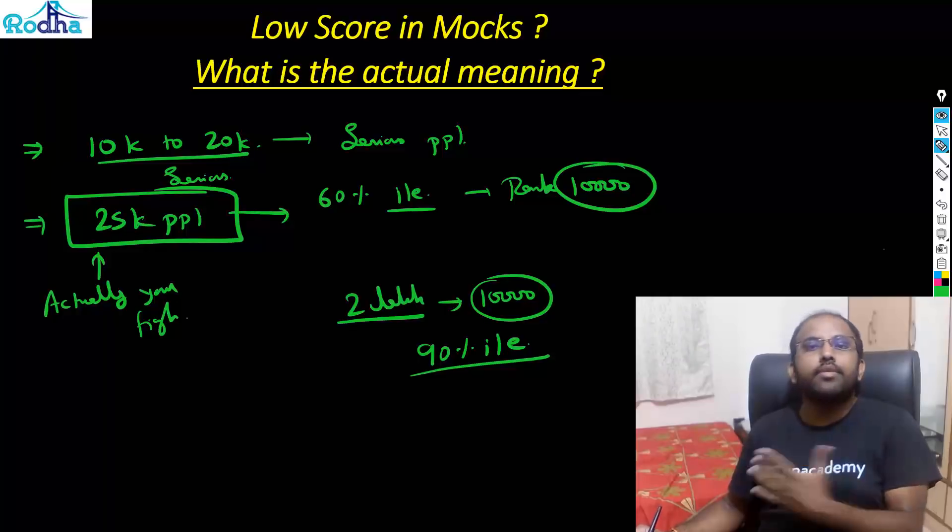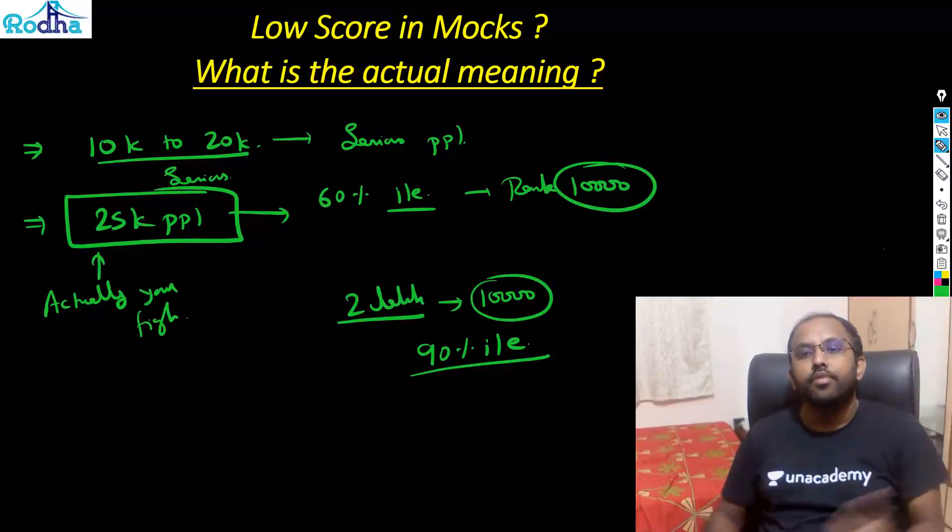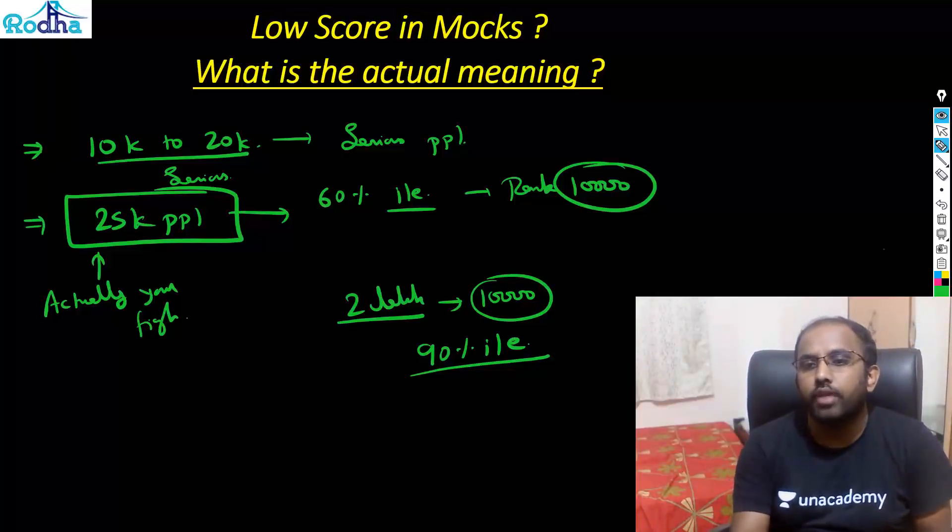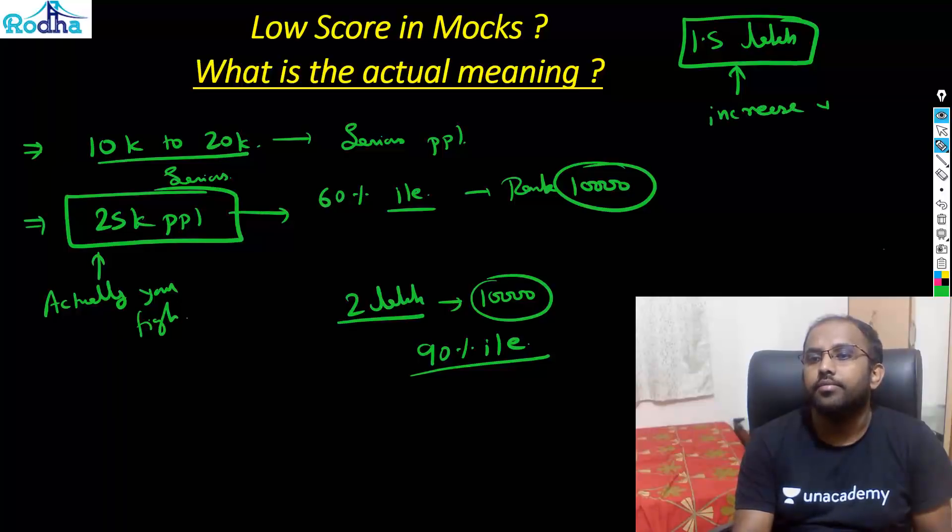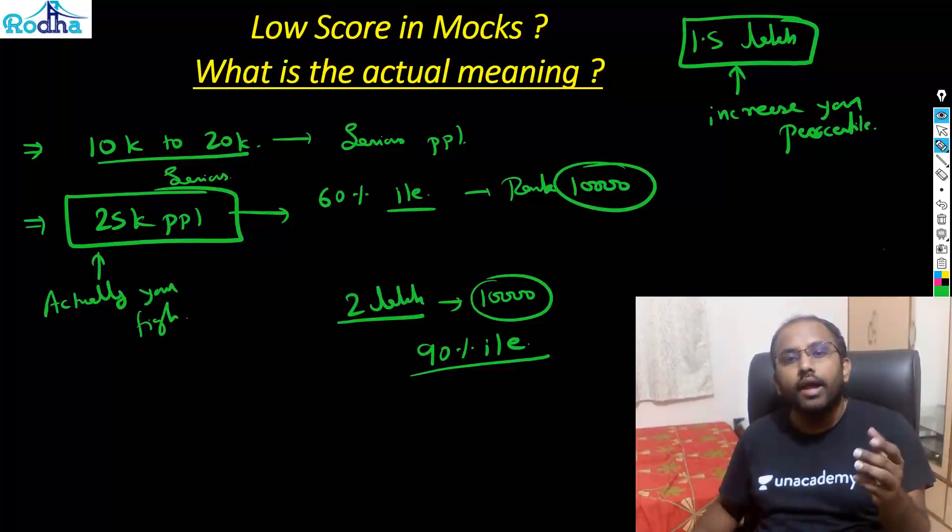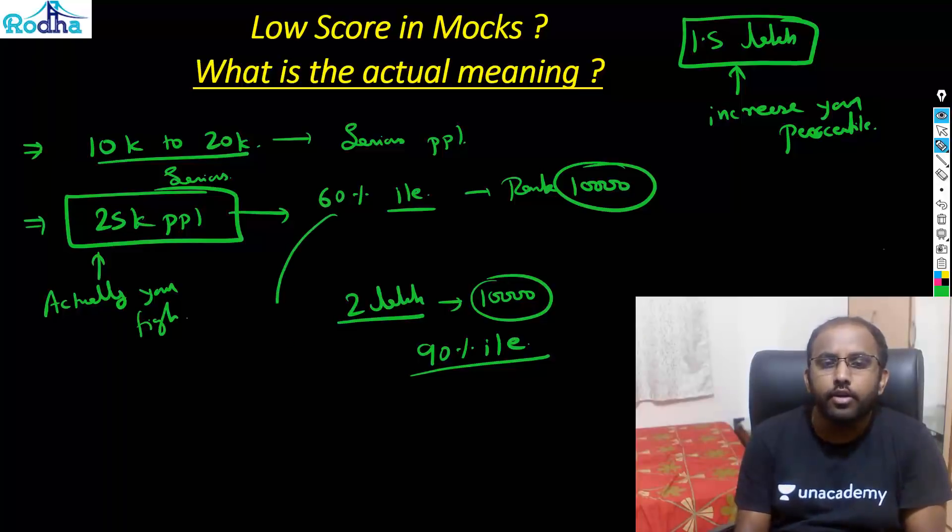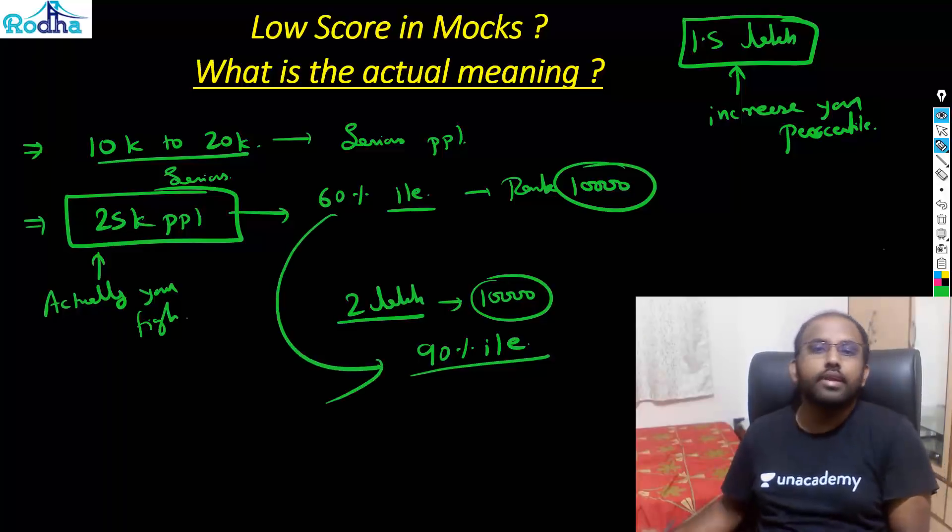So you are getting frustrated at 60 percentile because you are fighting among all the serious candidates there. But in any national level exam this doesn't happen. There are all those extra people who just sit in the CAT just for the sake of giving it. Many people out of those extra 1.5 lakh people will sit in the CAT just to increase your percentile. Your rank, your knowledge is same. Your rank may be same but your percentile has increased from 60 percentile to 90 percentile. This is what happens in any exam.